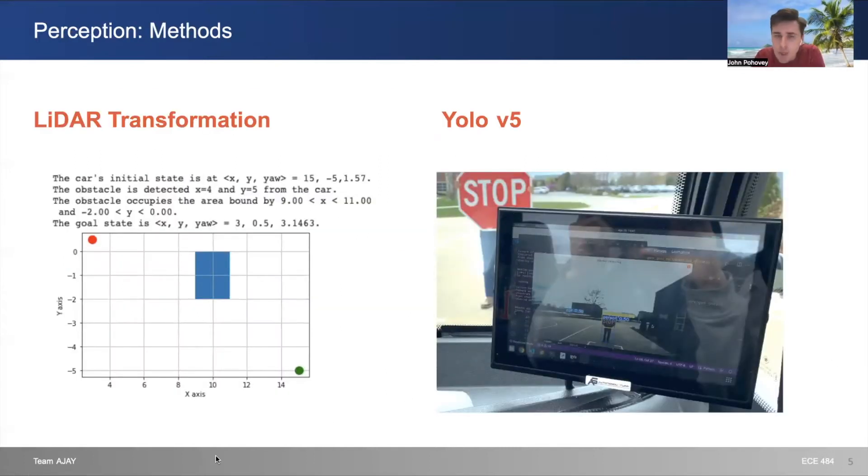Two types of perception that we used: we tried YOLO first, which uses the camera for object detection. As you can see in the image on the right, it detected a stop sign, a person, and a car in the background. But a drawback was that it didn't have distances to the objects, which we needed for obstacle detection. So we moved to LiDAR. As you can see on the left, the green dot is the car, the red dot is the goal state, and the blue rectangle is the obstacle. The LiDAR data is local to the car, but we transform it so we can use it when planning on the global map.